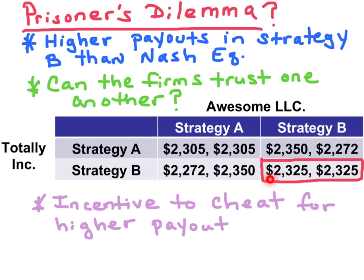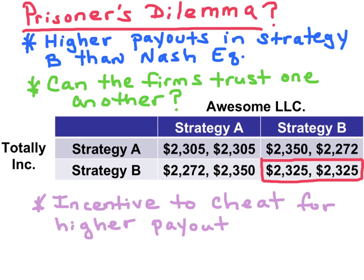If one firm cheats and plays Strategy A while the other firm plays Strategy B, the firm that cheats will end up with more profit, while the firm that played Strategy B is going to suffer and lose profit. There's an incentive to cheat for a greater payout — that's the Prisoner's Dilemma.